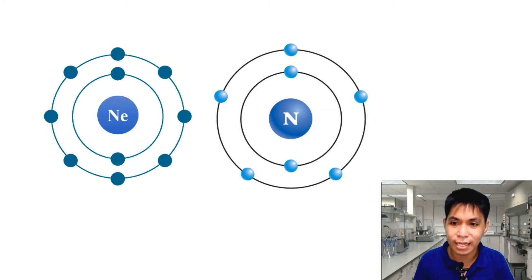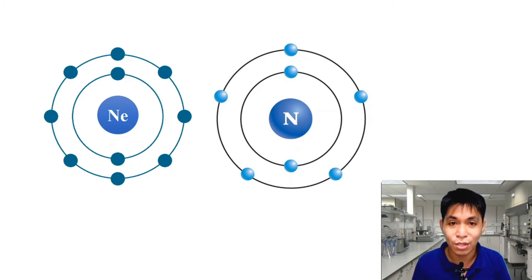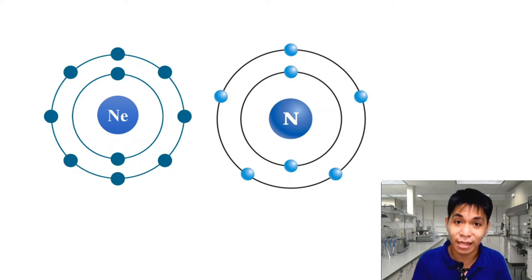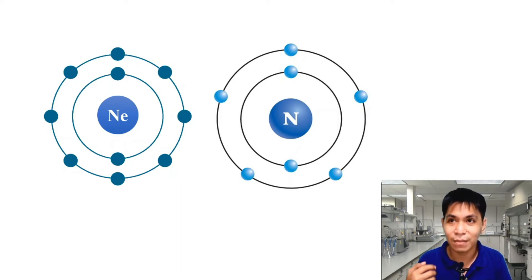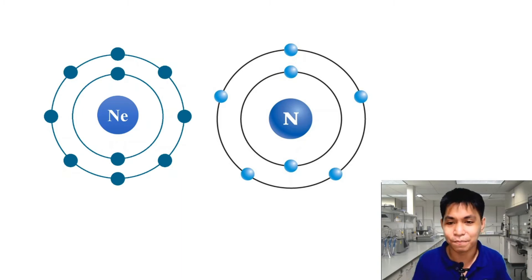If nitrogen wants to be stable, what can it do? An atom has many options. The most common is either gaining electrons to complete the 8 required, or giving away electrons.